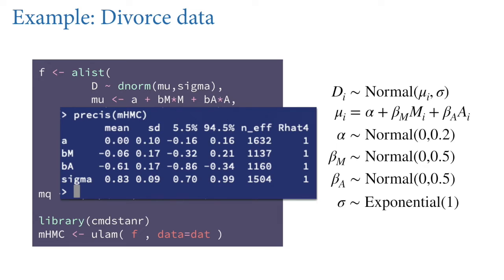The precis output for the divorce model fit with Hamiltonian Monte Carlo shows means, standard deviations, and compatibility intervals that are practically identical to the quadratic approximation results. This is a standard linear regression — we don't need Hamiltonian Monte Carlo for a problem like this, but this is where we start so you understand it's giving the same results in principle. As we scale up to bigger models, quadratic approximation simply won't work at all, and we're going to have to use Hamiltonian Monte Carlo. What's different in the precis output are two new columns on the right: the n_eff column and r-hat — I'll explain what those are in a bit. They're about diagnosing how well the simulation has functioned.